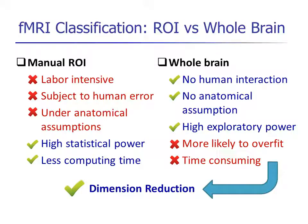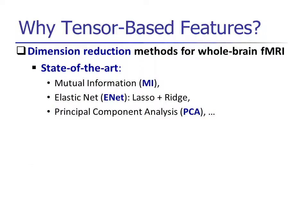These problems can be tackled by dimension reduction. Therefore, we focus on dimension reduction for whole brain fMRI classification.